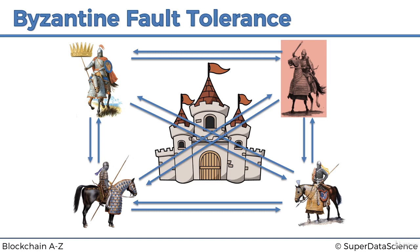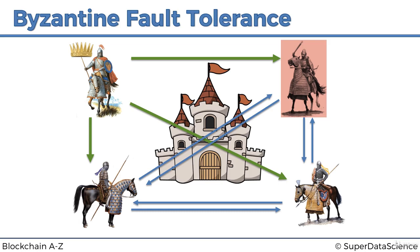The algorithm they're going to use is simply to look at the majority of the messages they get and base their decision on that. The main general issues an order — let's say 'attack.' It doesn't really matter whether it's attack or retreat; as long as the majority agree on what to do, that's fine. In this case he issues an order to attack. He's not the traitor here — he's made up his mind.